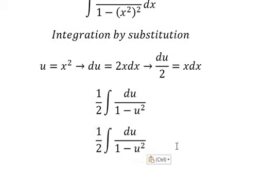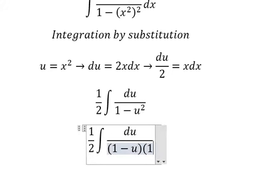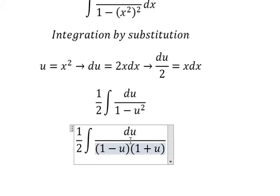Next, so 1 minus u squared - that is about identity. So I will put 1 minus u, 1 plus u. The u I will put in here.